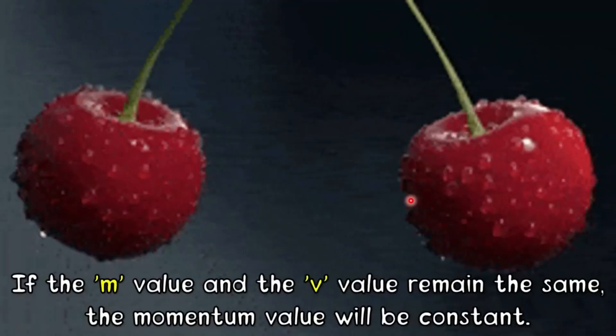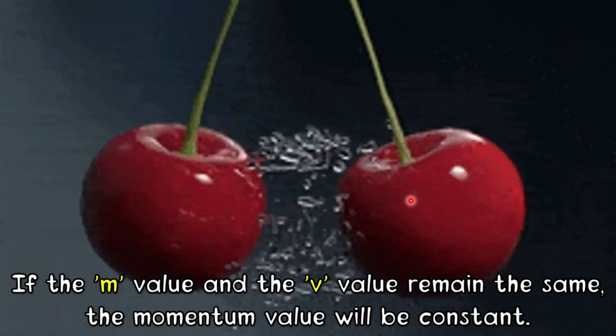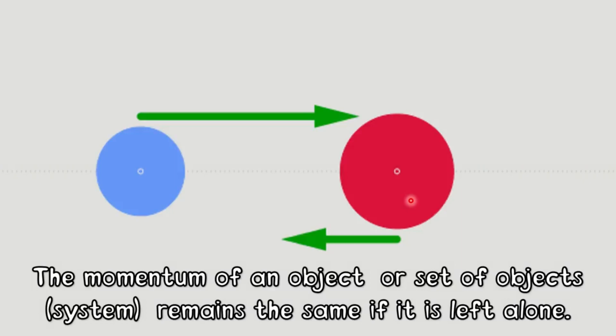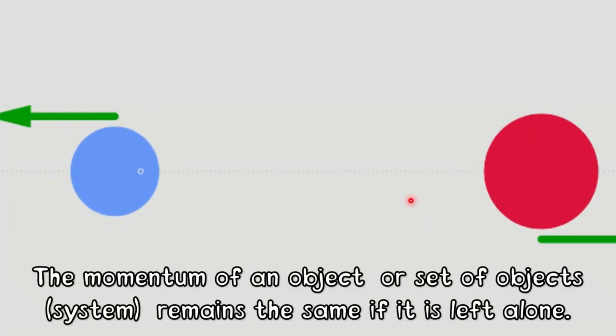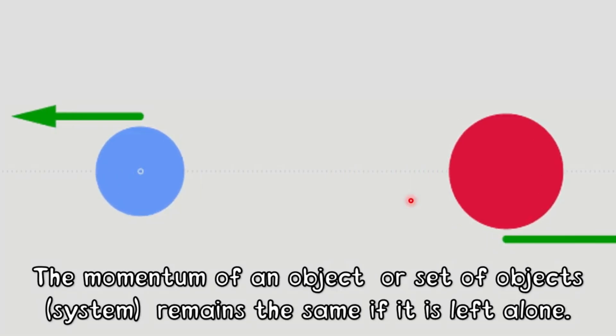If the mass and velocity remain the same, the momentum value will be constant. The momentum of an object or set of objects or a system remains the same if it is left alone.